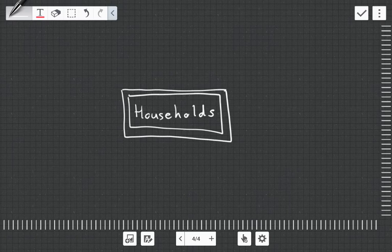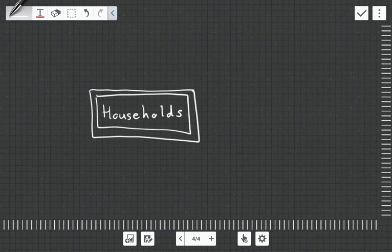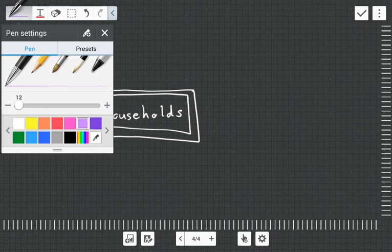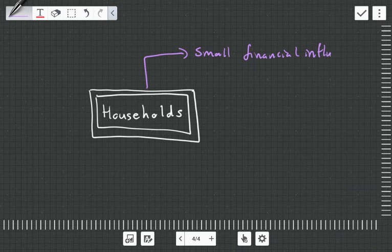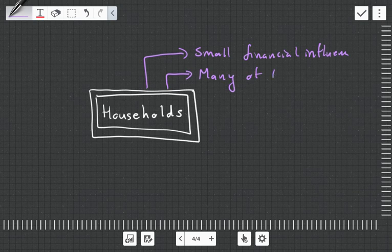The syllabus objective asks us to demonstrate knowledge of the influence from main investor classes over the commercial and economic environment. I want to start with households. What are some qualities of households? Well, they're quite small in terms of their financial influence, but there are many of them.